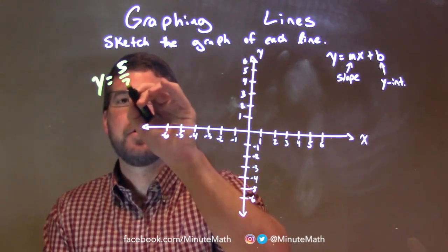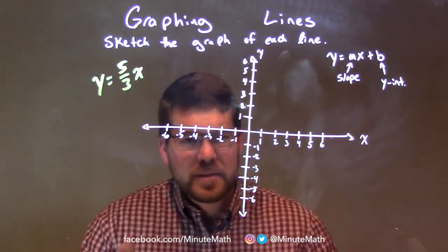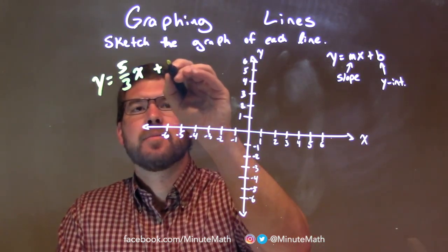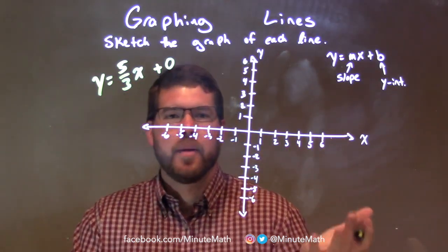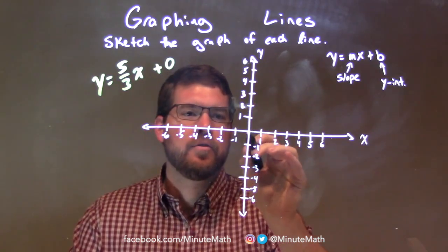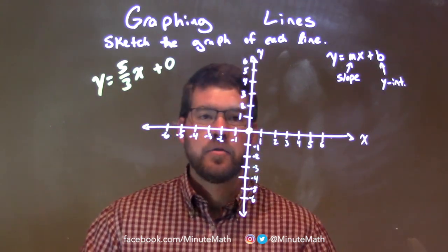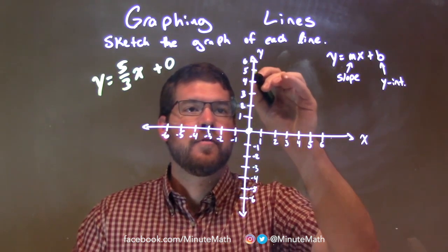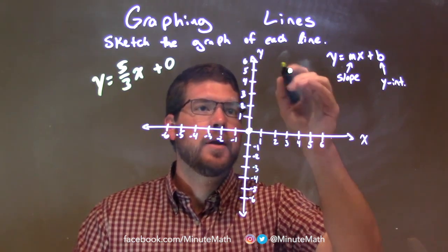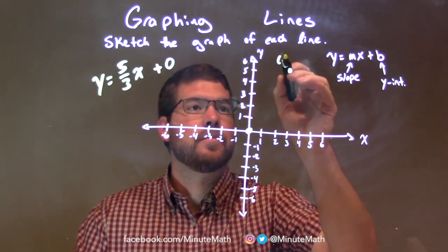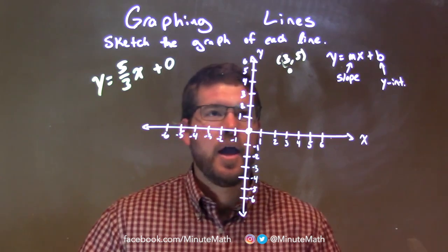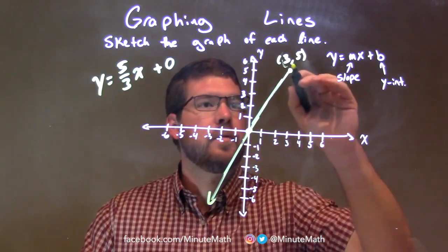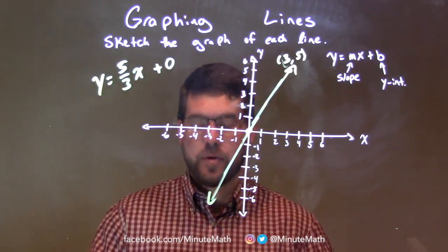y equals 5 thirds x. So if I'm just given 5 thirds x, sometimes we can tell the b-value is plus 0. We don't always write plus 0, but that b-value being 0 shows we're crossing the origin at 0 comma 0 — that's our y-intercept. Our slope is 5 thirds: go up 5 units — 1, 2, 3, 4, 5 — over 3: 1, 2, 3. So we have a point at 3 comma 5. We connect these two dots — and there we go, we have our line.